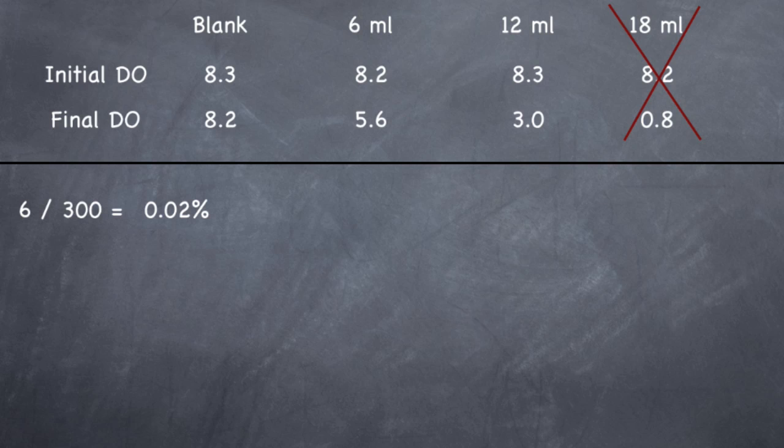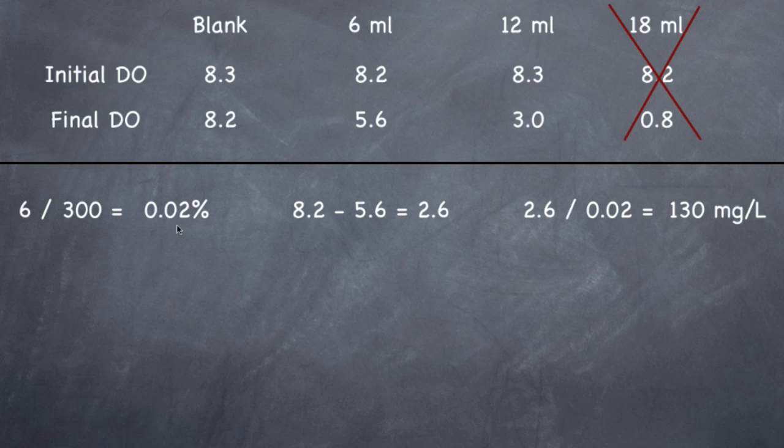Now we're going to find out the BOD of sample 1. So 8.2, which is initial DO, minus final DO, 5.6, equals a DO depletion of 2.6. So 2.6 divided by your sample concentration will give you the BOD. And the BOD of this particular sample is 130 milligrams per liter. So 8.2 minus 5.6 equals 2.6 divided by 0.02, which is the percent concentration.